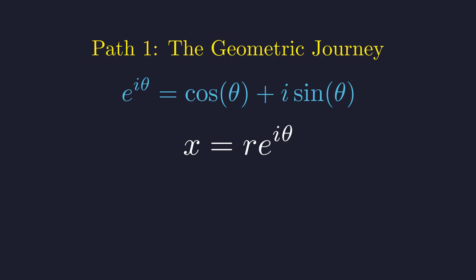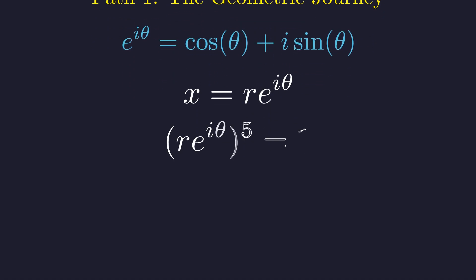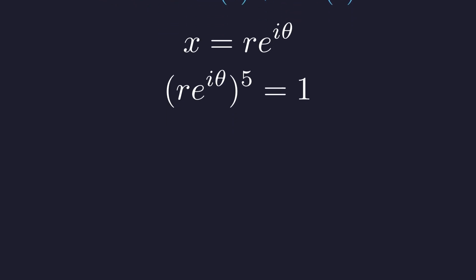We start by representing our unknown x in its polar form, where r is the distance from the origin and theta is the angle. Substituting this into our equation, we get this exponential form. This expands to r to the fifth times e to the i 5 theta equals 1 times e to the i 0.